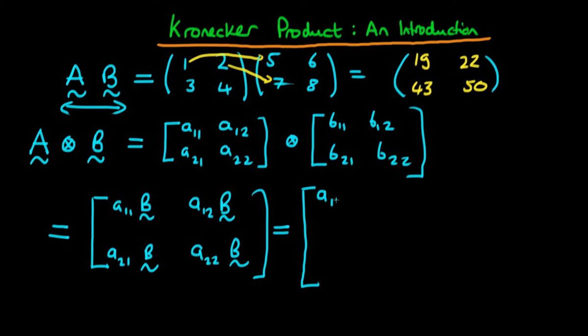If we write this out in long form, the first component would be A11 times B11, the second component A11 times B12, the third component A11 times B21, and then A11 times B22.